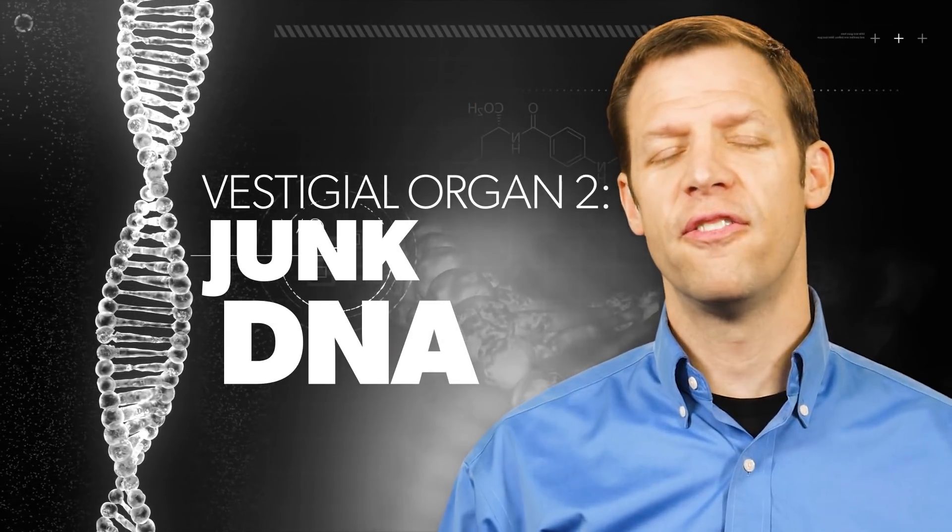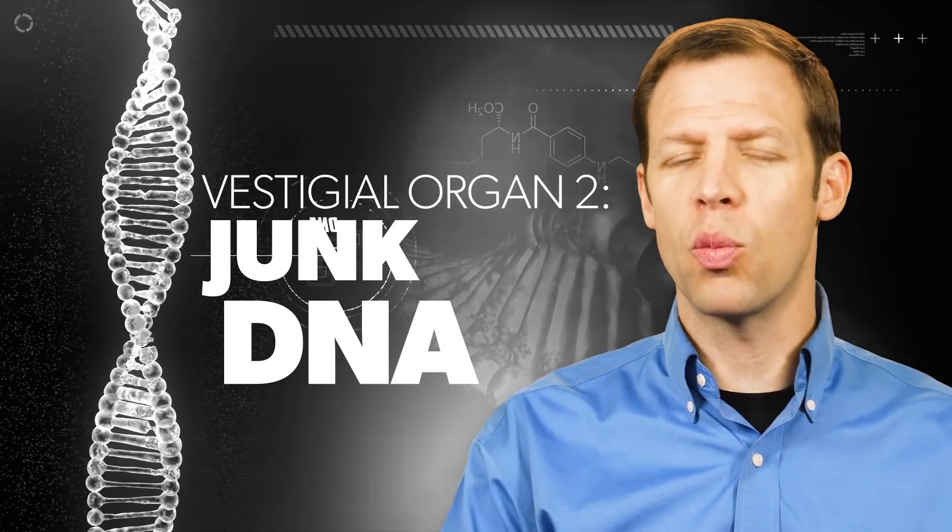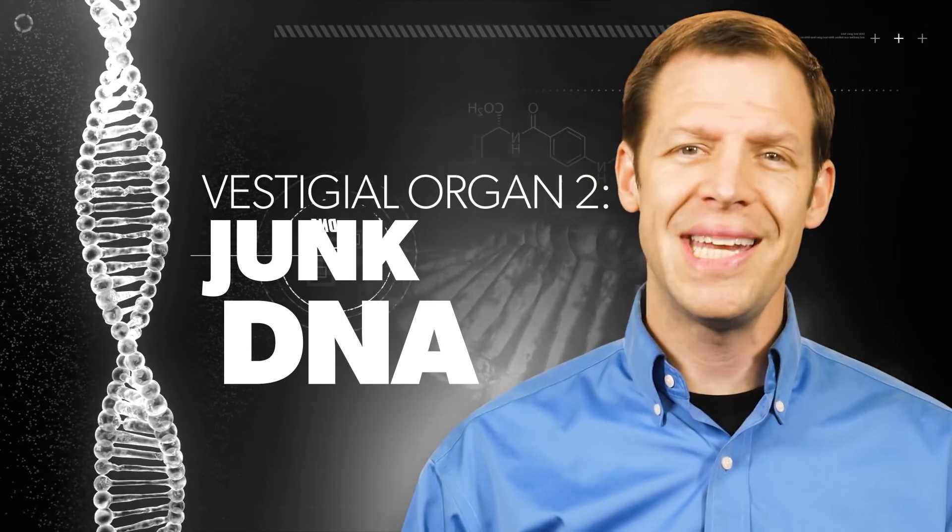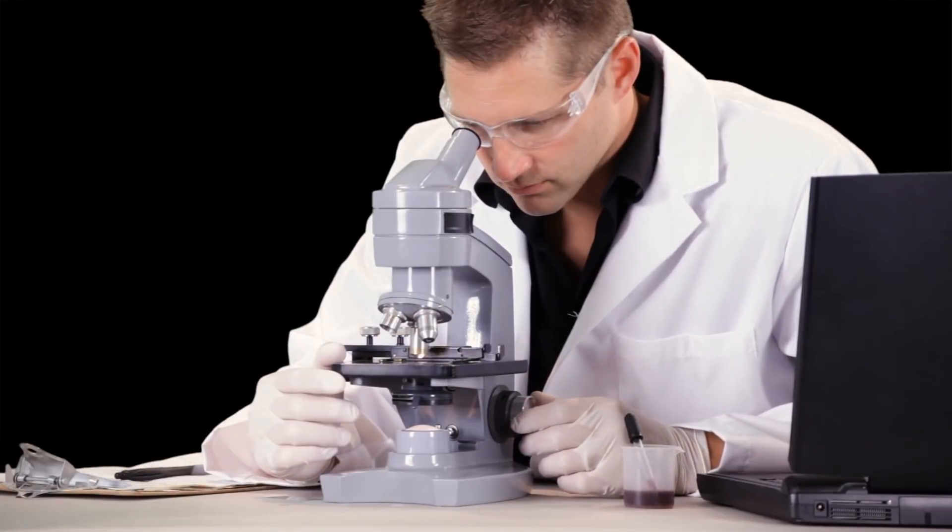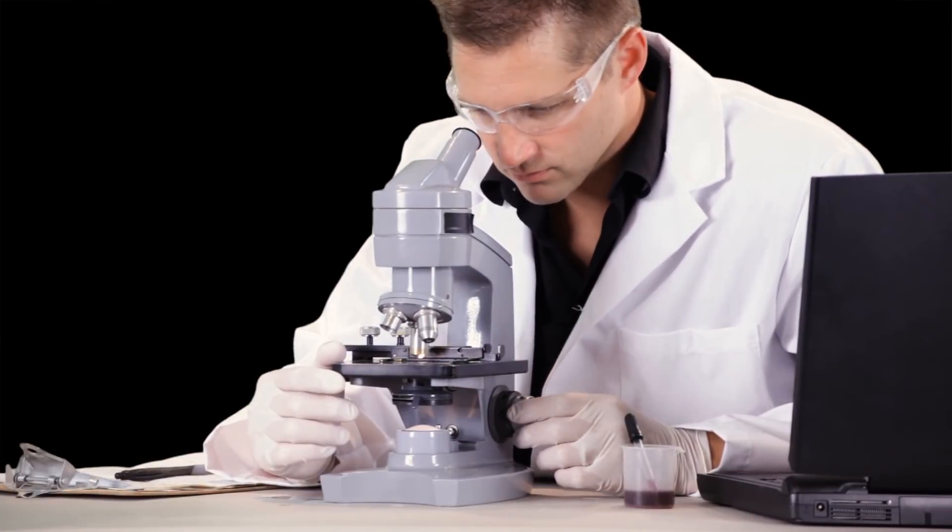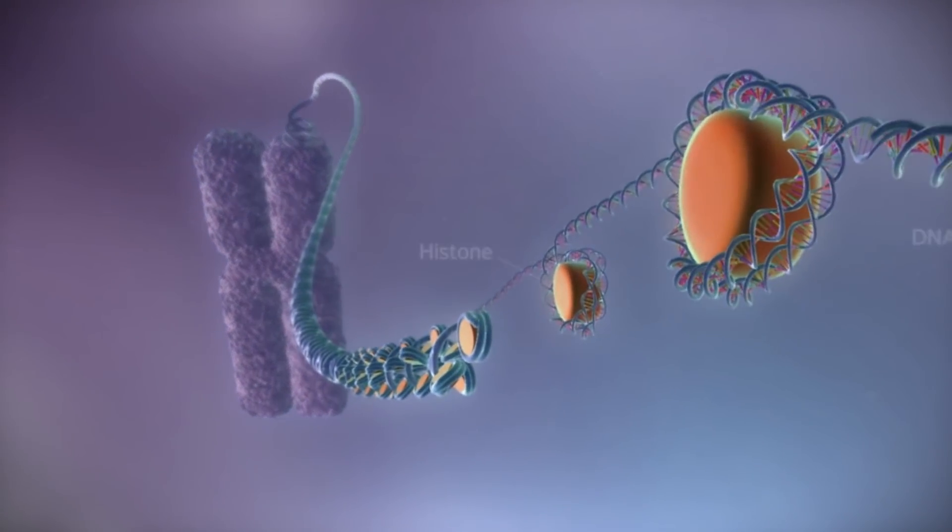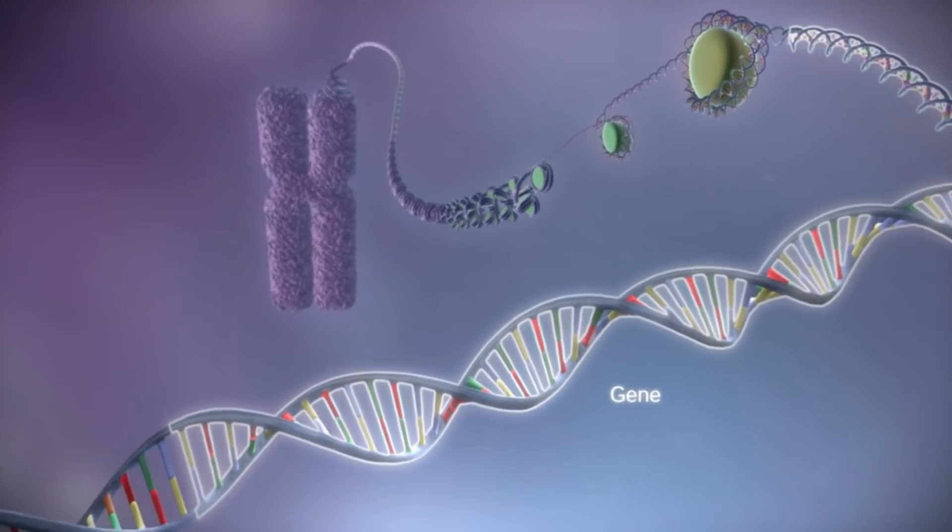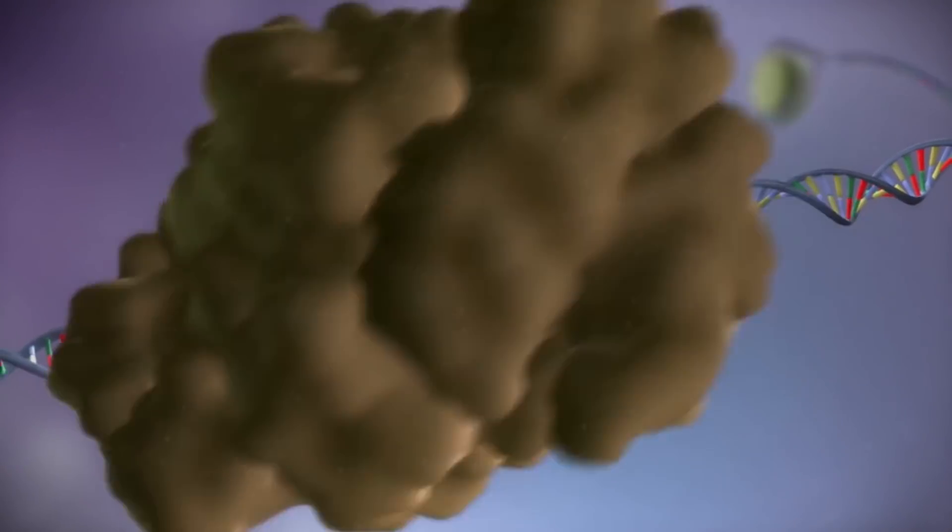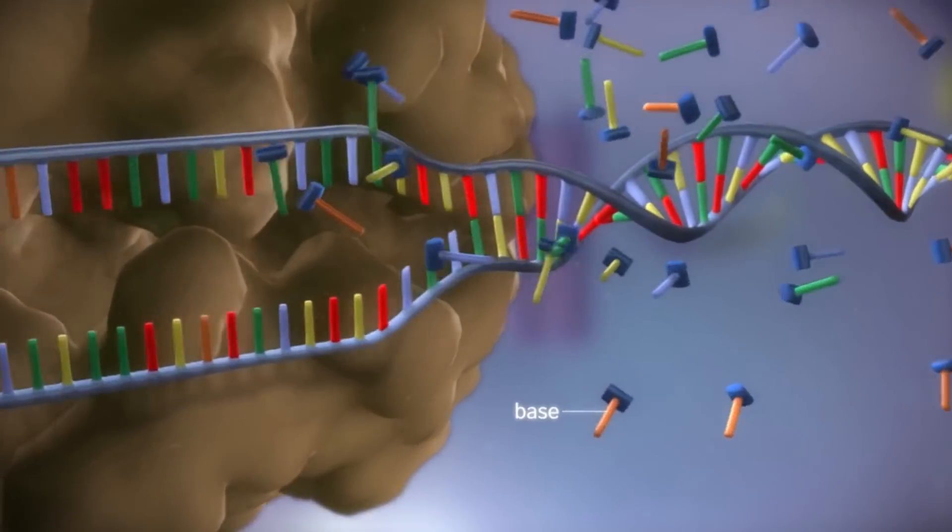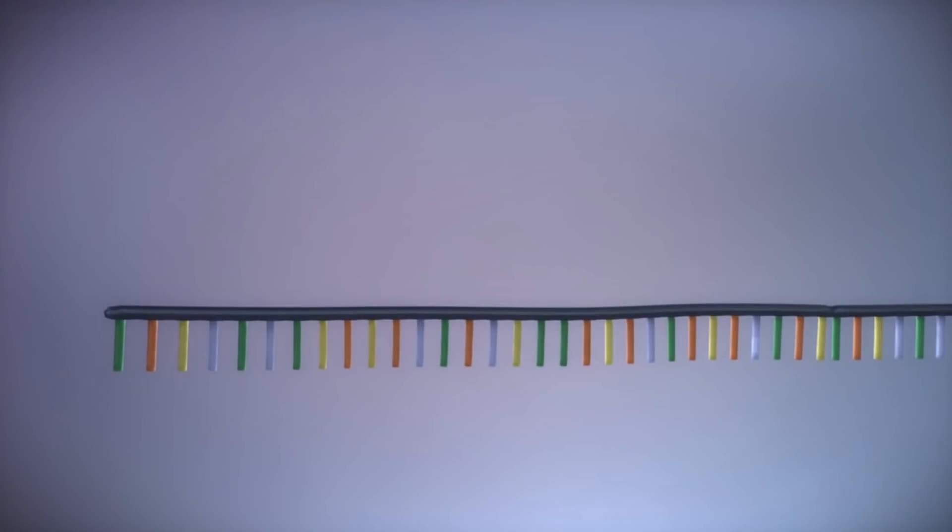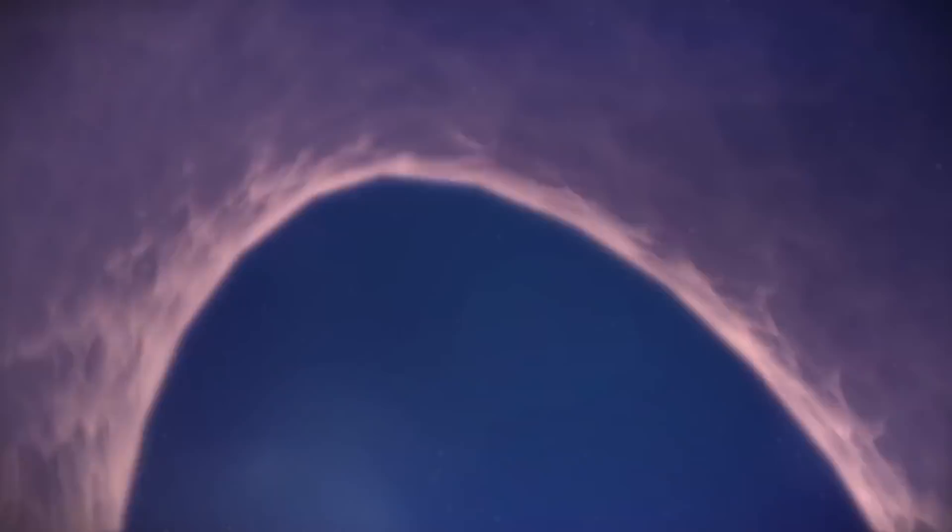The second vestigial organ that we'd like to put forward, it's not really even an organ, it's the idea of junk DNA. You see, for many years as scientists looked at the human genome, they thought that there were parts of the DNA molecule that were useless. They thought that there were parts that simply were there because they were left over from evolution. They didn't program for any genetic information that played out in the human body. And they called that junk DNA.